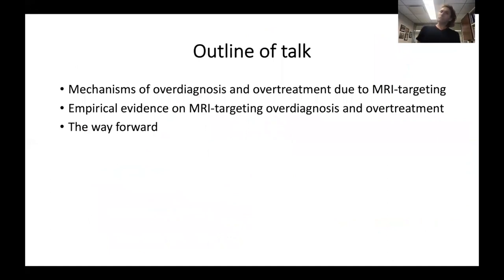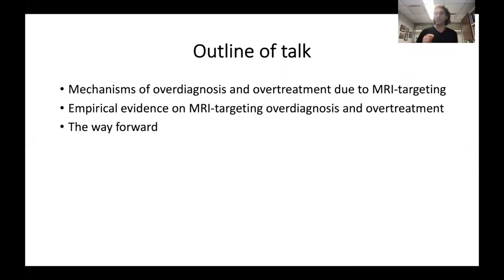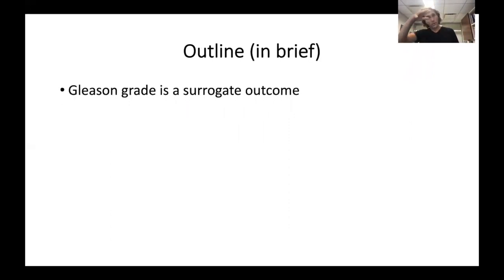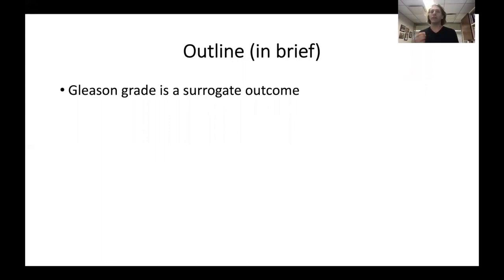So what I'm going to be talking about is why MRI targeting causes over-diagnosis and over-treatment, what's the evidence that it does indeed do so, and what I think is the way forward. And if you don't want to listen to all that, the only thing you have to remember is this: all the studies that we use to say we should use MRI — randomized trials and so on — use Gleason grade as the endpoint. And that is in fact a surrogate outcome.